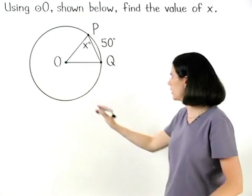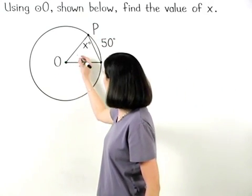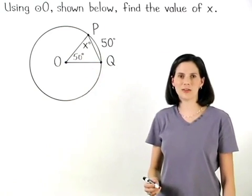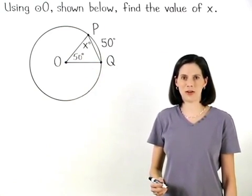We know that the measure of angle O is also 50 degrees, because the measure of a central angle is equal to the measure of its minor arc.